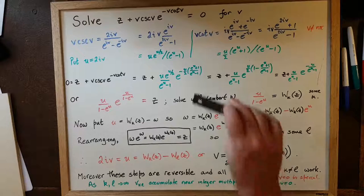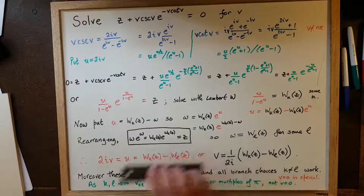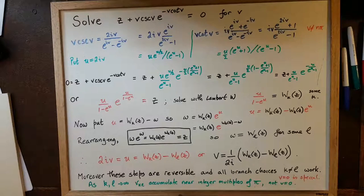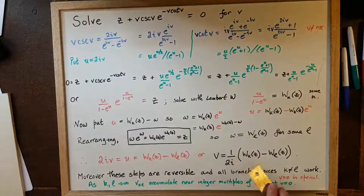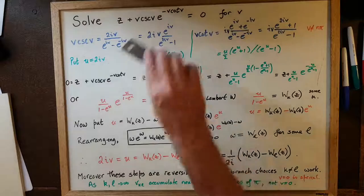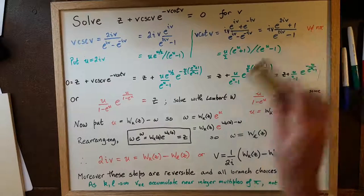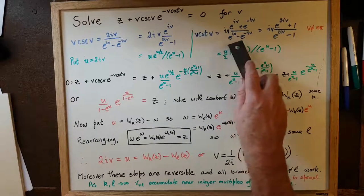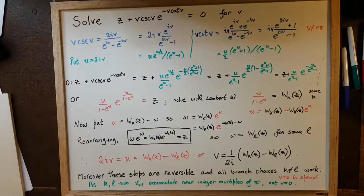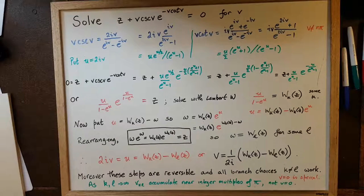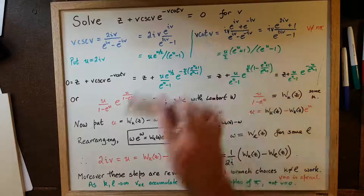It is surprising that this solution is possible at all, and also that each step is reversible. If we choose any two branches of Lambert W, take their difference, and divide by 2i, we get a solution of this equation. Every solution must look like this, and everything of this form is a solution. We do need to worry about v not equaling nπ, because that causes division by zero in the original equation.